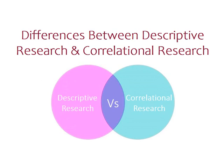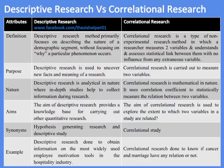Differences between Descriptive Research and Correlational Research. Descriptive research method primarily focuses on describing the nature of a demographic segment without focusing on why a particular phenomenon occurs, while correlational research is a type of non-experimental research method in which a researcher measures two variables and assesses the statistical link between them with no influence from any extraneous variable.